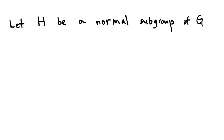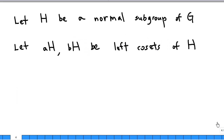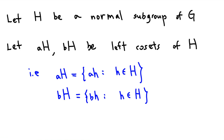Suppose H is a normal subgroup of G. That means the left coset containing G and the right coset containing G are equal, that is, gH equals Hg for all elements g of the group G. Let AH and BH be left cosets of H. AH consists of all elements a times h, for all h inside subgroup H. And BH is the coset consisting of all elements bh, where h is an element of the subgroup H.